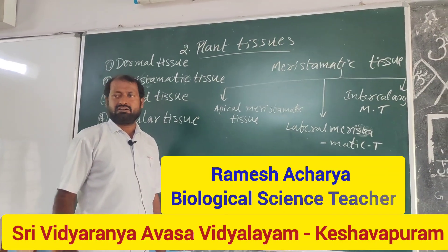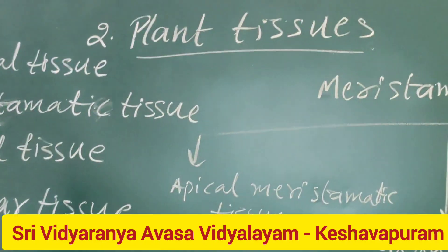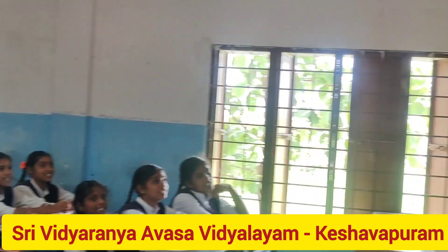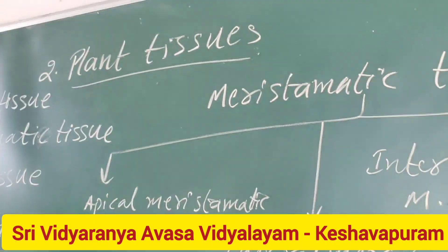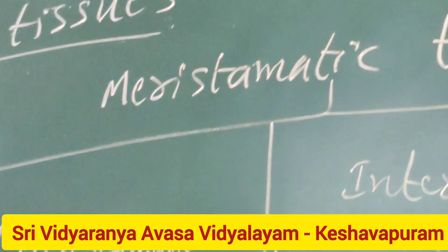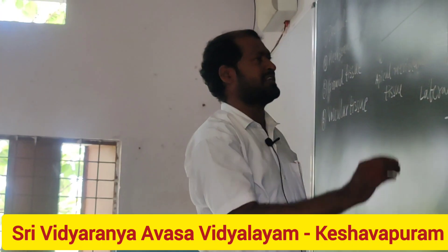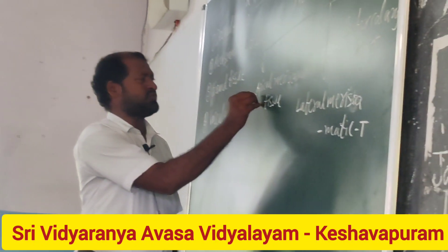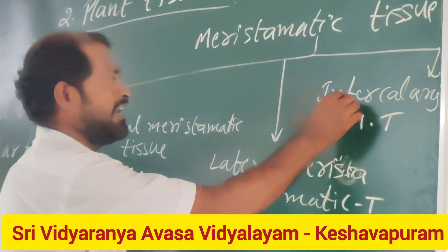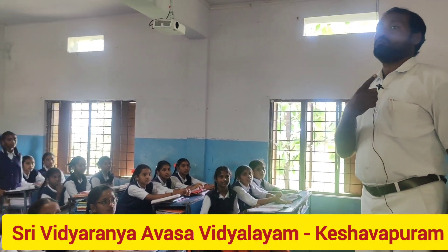Children, today we are discussing about meristematic tissue. We already completed dermal tissue. Meristematic tissue helps in plant cell division. It is divided into three types: the first is apical meristematic tissue, the second is lateral meristematic tissue, and the third is intercalary meristematic tissue. Now let's go observe outside.